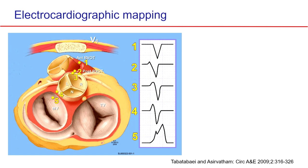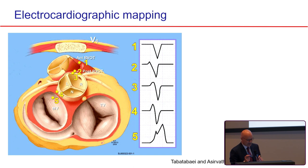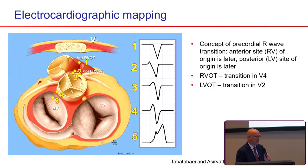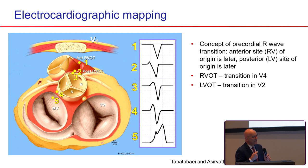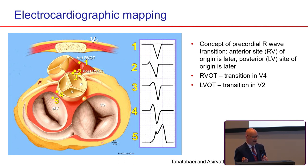This is a nice way of illustrating the key concept of understanding anterior versus posterior outflow tract, a Sam Eservatham idea. Looking at V1, if you have arrhythmias from anterior sites, you would have less positive forces in V1. From the free wall of the right ventricle—the most anterior part—there's no voltage in V1. As you step back posteriorly, all the way to the mitral annulus, the R wave in V1 gets more and more positive.